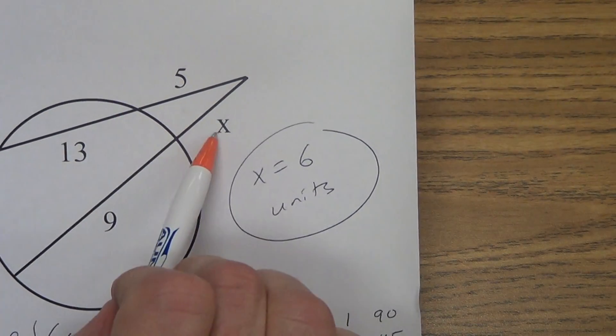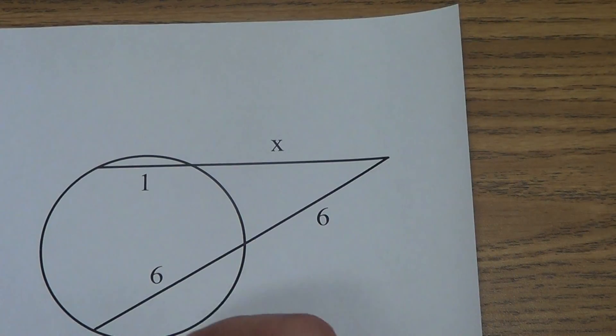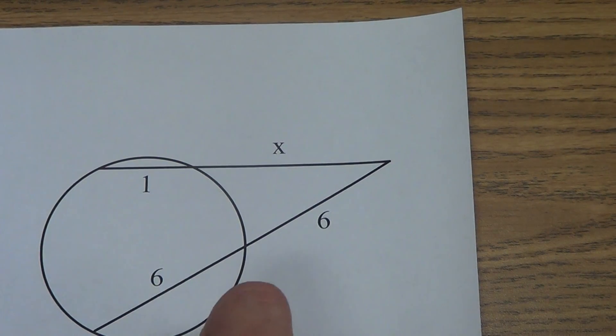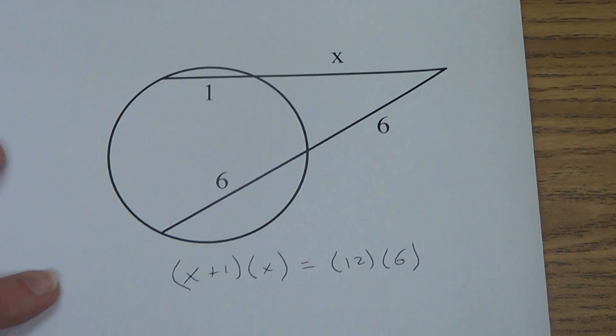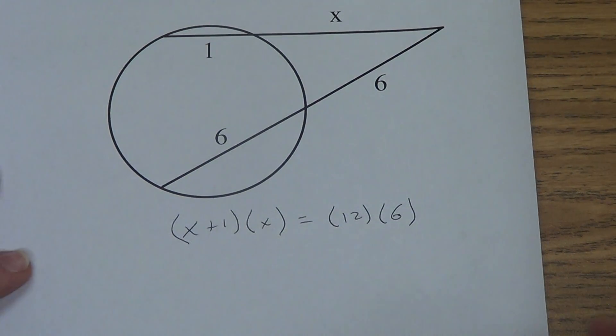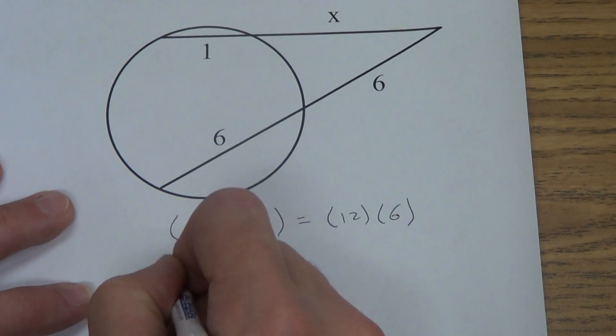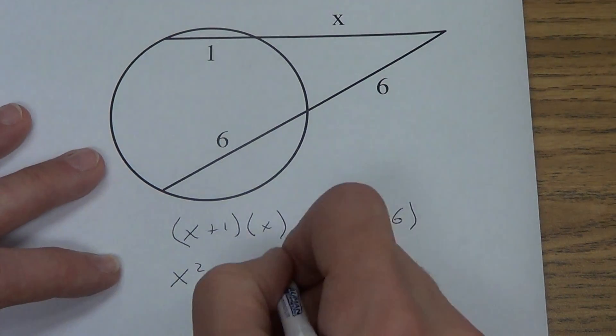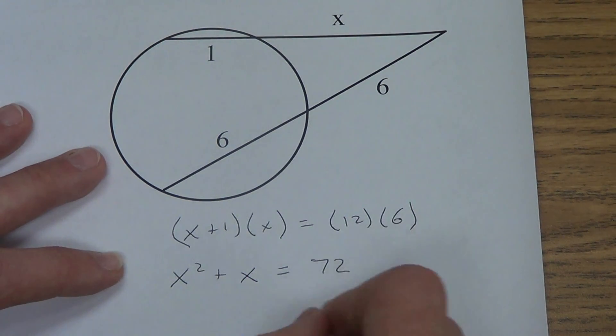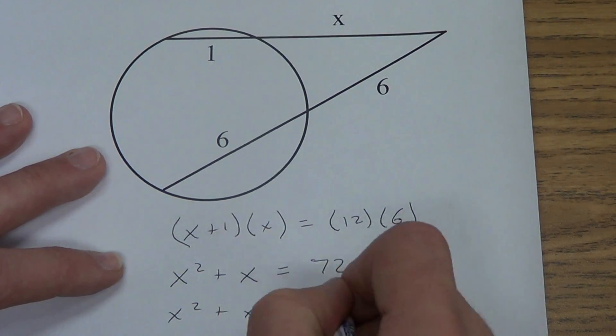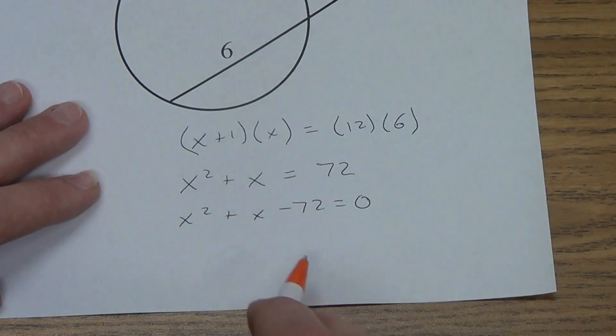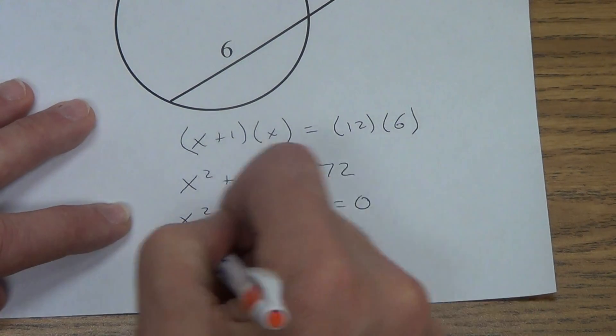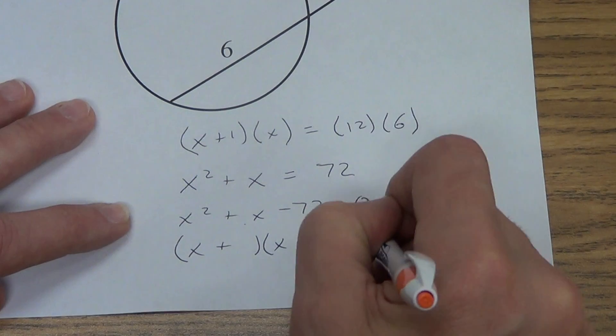These are a little bit harder when that x gets outside and you have to factor. We're going to do another example like that. Here we go. Whole secant segment, x plus 1, times external part x, equals the whole thing, 12, times the external part, 6. x squared plus x equals 72. I'm going to bring that 72 over by subtracting it. And it equals 0. I'm going to factor this again. x and x and a plus and a minus equals 0.